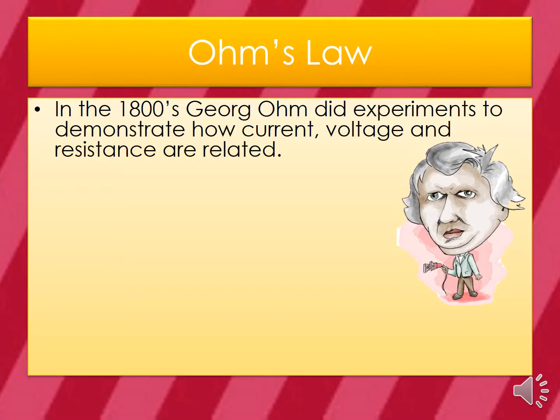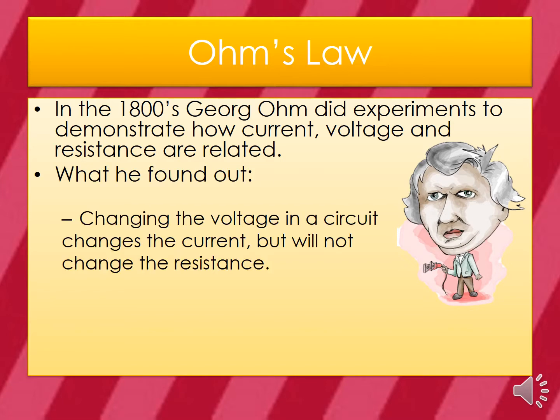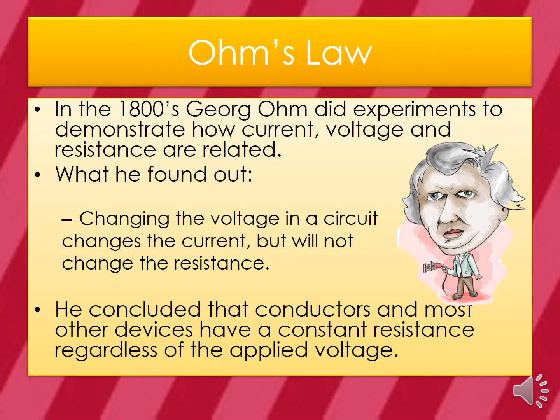Ohm's Law. In the 1800s, George Ohm did experiments to demonstrate how current, voltage, and resistance are related. What he found was that changing the voltage in a circuit changes the current, but will not change the resistance. He concluded that conductors and most other devices have a constant resistance, regardless of the applied voltage.